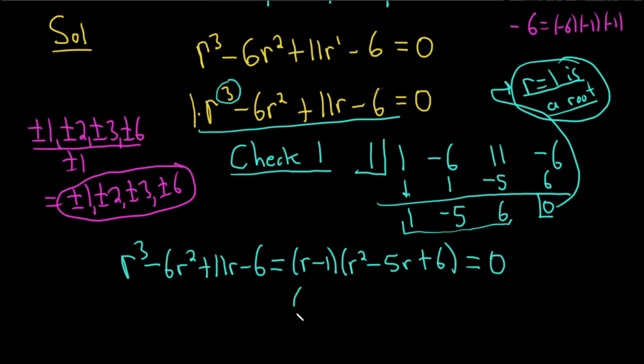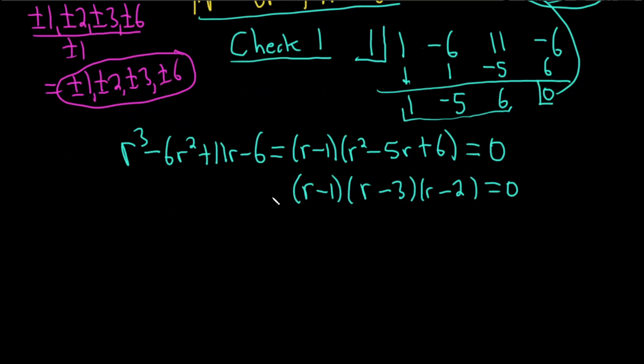This, I believe, factors. So you have r minus 1. We need two numbers that multiply to 6 and add to negative 5. I'm thinking negative 3 and negative 2 will do it. So now we have three possible answers, which we knew one of already. And so we have solved our characteristic equation.